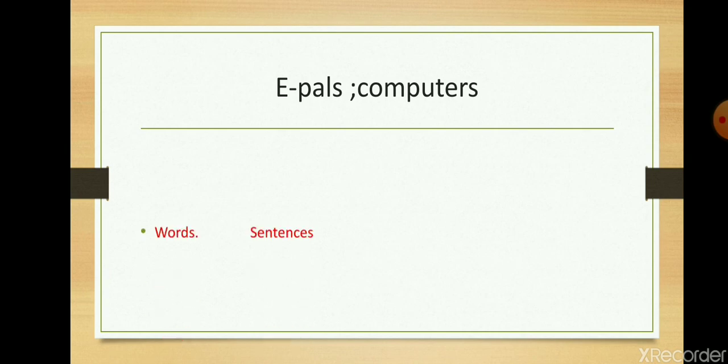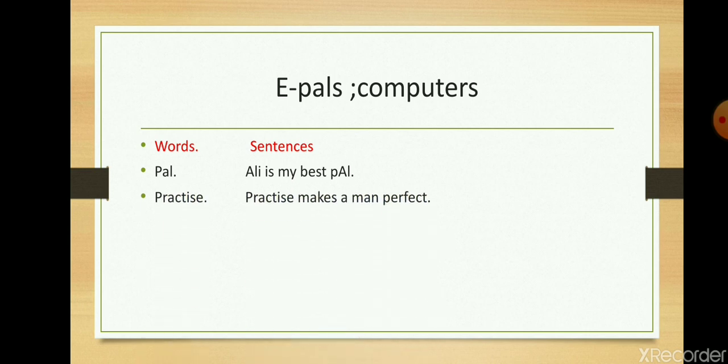Next one is words and sentences. Paul, Ali is my best pal. Paul is mean friend. Practice: practice makes a man perfect. Interest: Ali does not show interest in study and game.